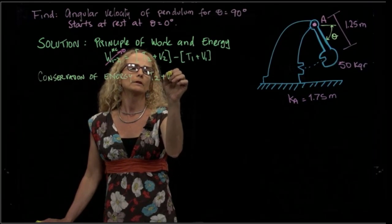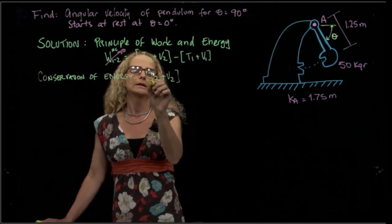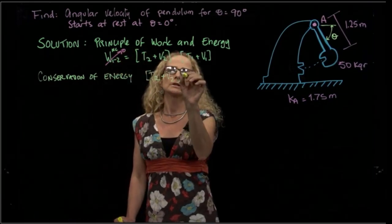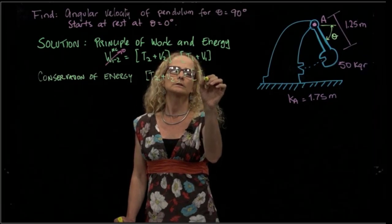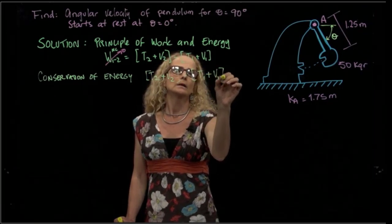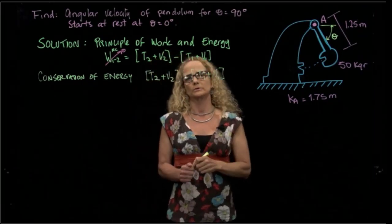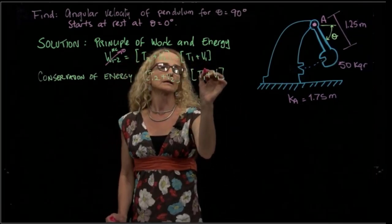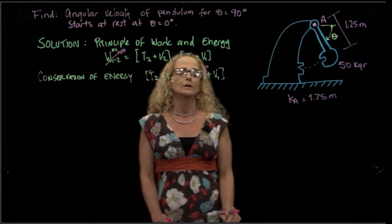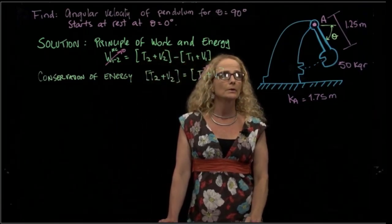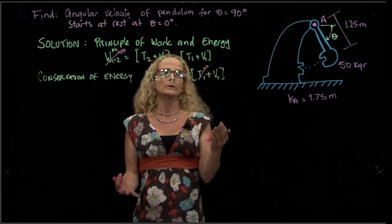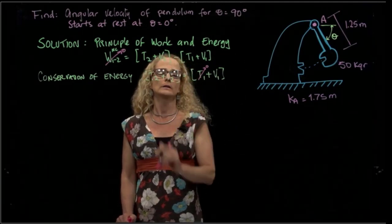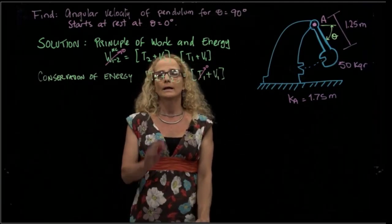So in this case, we actually have a problem of conservation of energy between the two positions. So T2 plus V2, kinetic energy plus potential energy in the second position, is equal to kinetic energy and potential energy in the first position. Since we start from rest, we can say that the kinetic energy in the initial position is equal to zero.